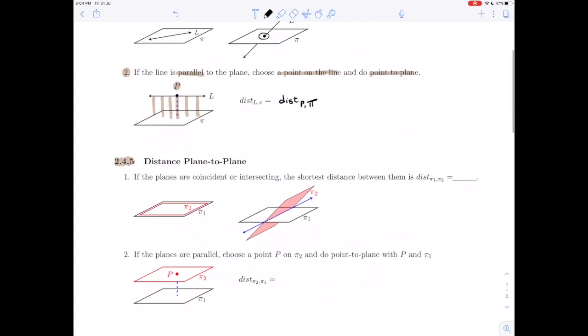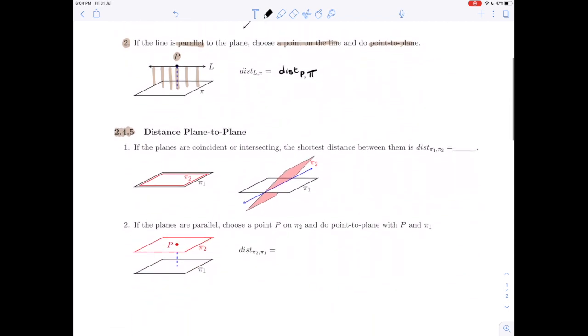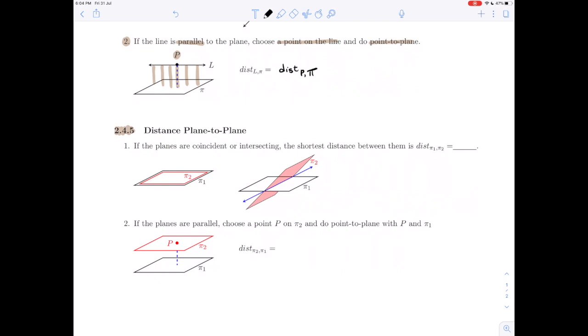So now, what about the distance from plane to plane, or the distance between planes? Again, two categories to think about here. The first: if the planes are coincident, or if they are intersecting, that's the same first type of situation that we had above. The distance between those two planes is then 0, or the minimum distance between them is 0.